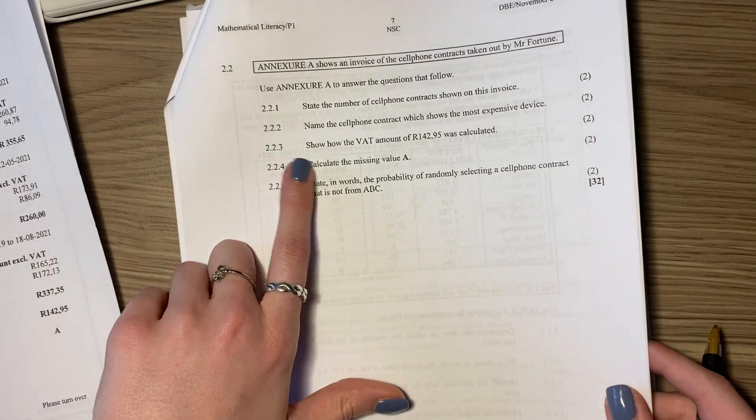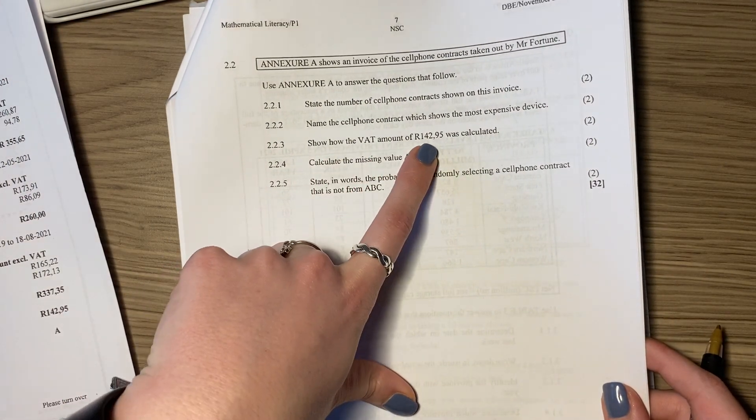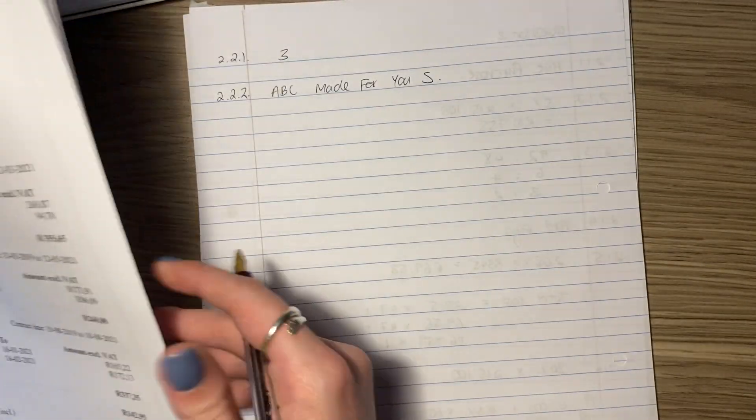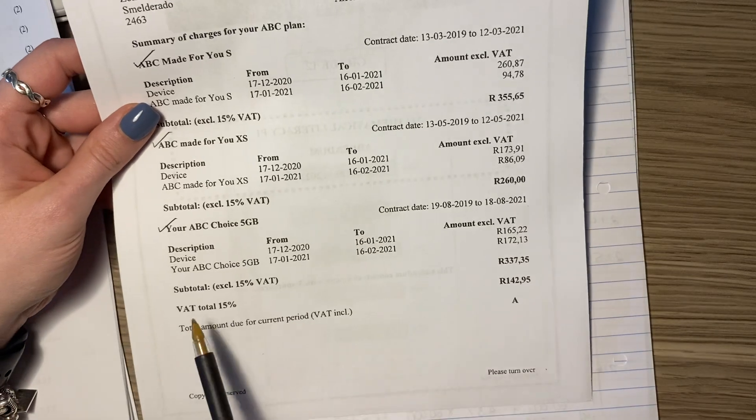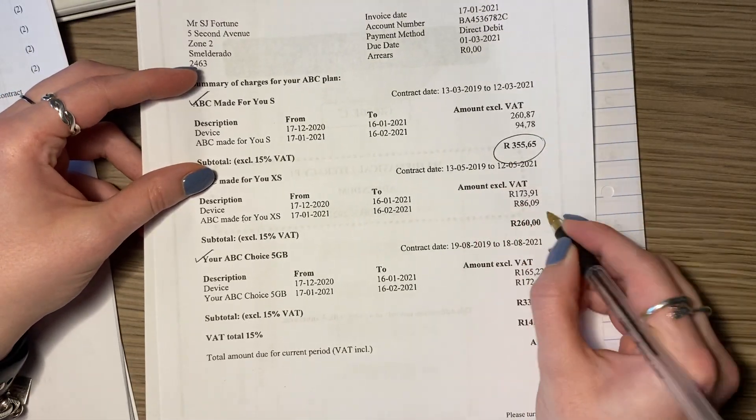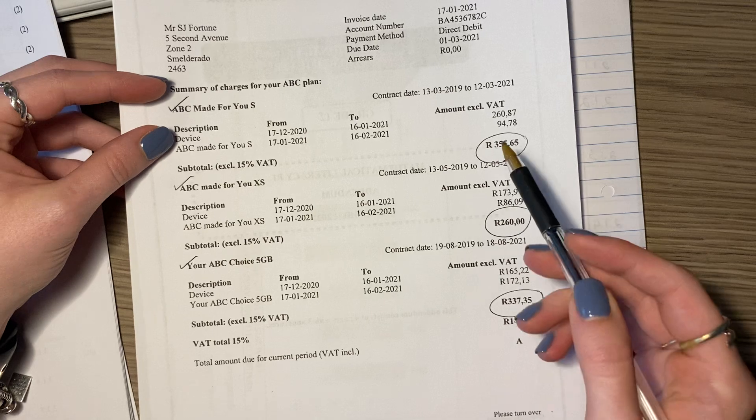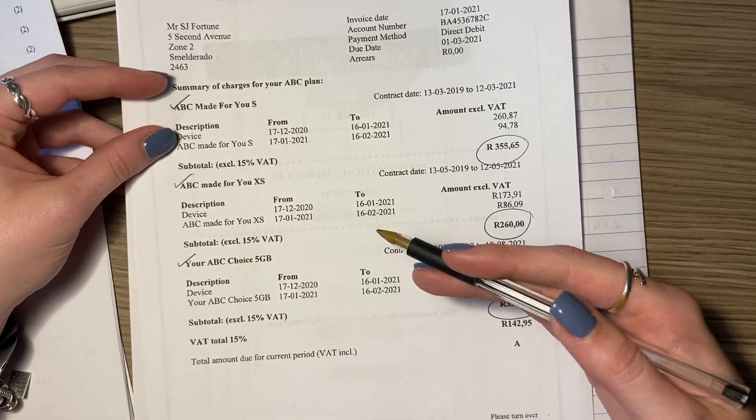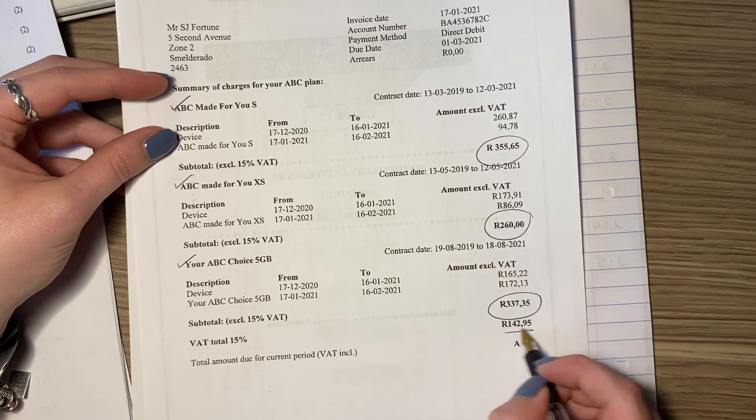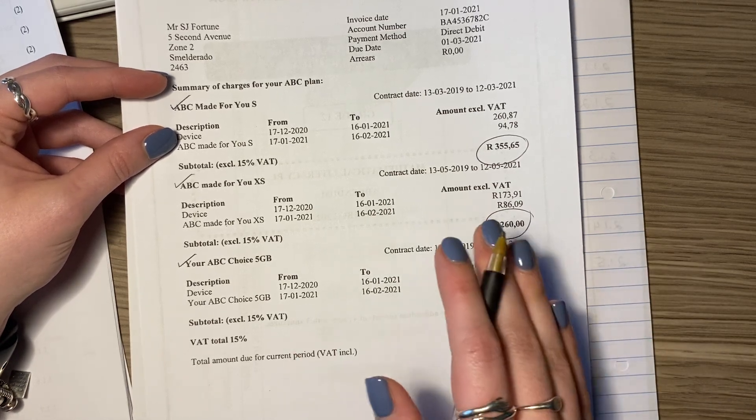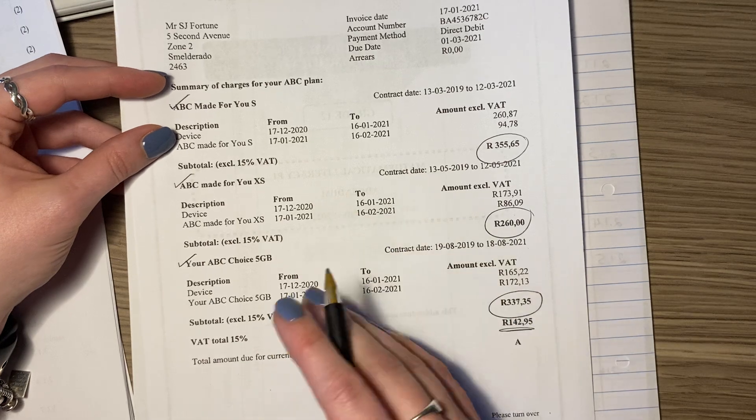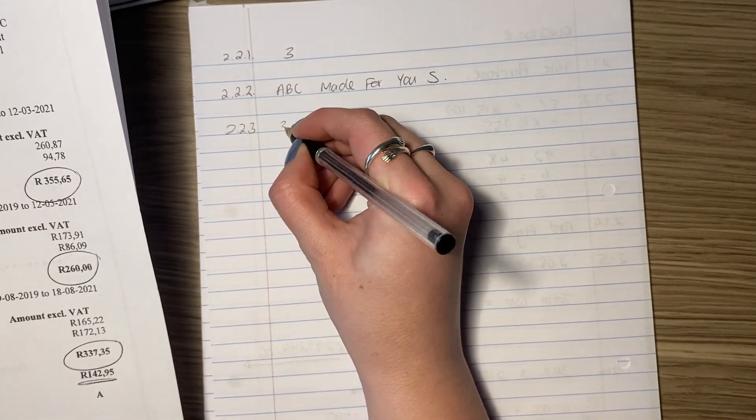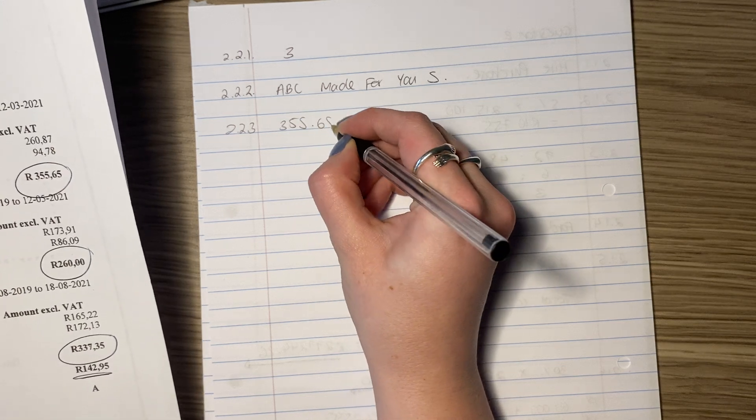Show how the VAT amount of 142.95 was calculated. You have these three contracts and they all exclude VAT, so you're going to add all of those together, then calculate VAT, and it should give us this. That's what we should be thinking. Let's add all those together first. Write your question number down, then add all of these together to see how much our three contracts total.